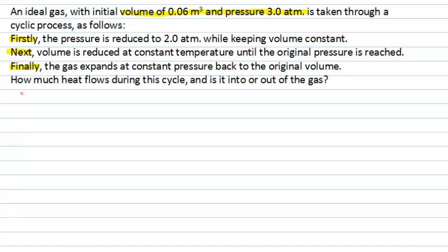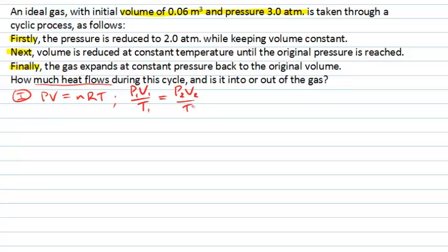We're being asked how much heat is flowing during the cyclic process. We know we've got an ideal gas, so we can relate pressure, volume, and temperature using the ideal gas law: PV = nRT. An equally useful form is that provided the amount of gas doesn't change — that is, the number of moles remains constant — then PV divided by T must be constant, no matter what state the gas is in.